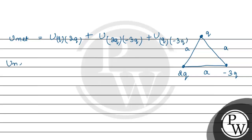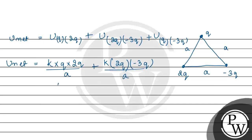Net potential energy क्या हो जाएगी? Potential energy होती है KQ₁Q₂/R। तो Q and 2Q के case में: K × Q × 2Q / A, plus K × 2Q × (−3Q) / A, plus K × Q × (−3Q) / A.